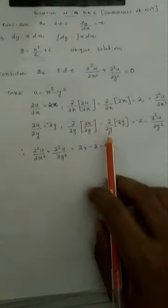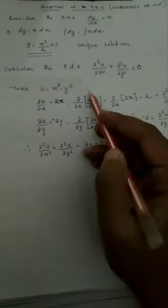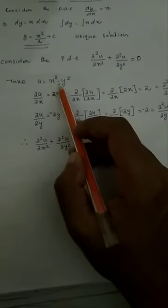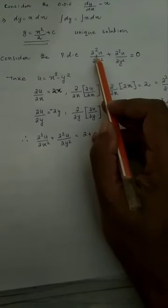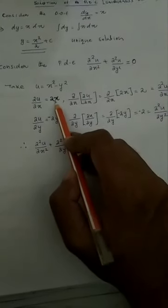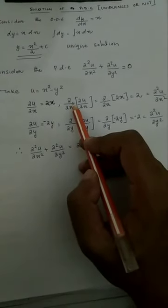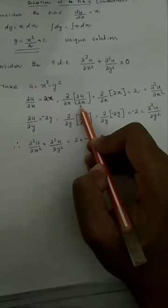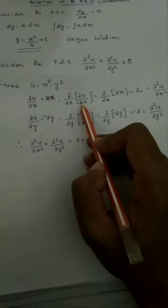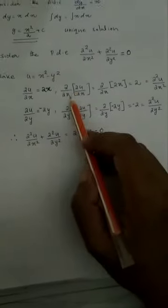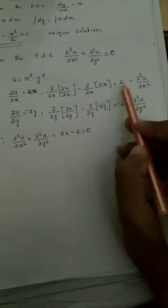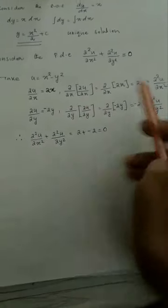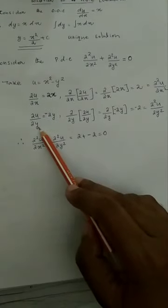I am taking u = x² − y², which is a function depending on two variables x and y. What is ∂²u/∂x²? We take the partial derivative of u with respect to x twice. The first derivative is ∂u/∂x = 2x, and then ∂²u/∂x² = ∂/∂x of 2x, which is 2.